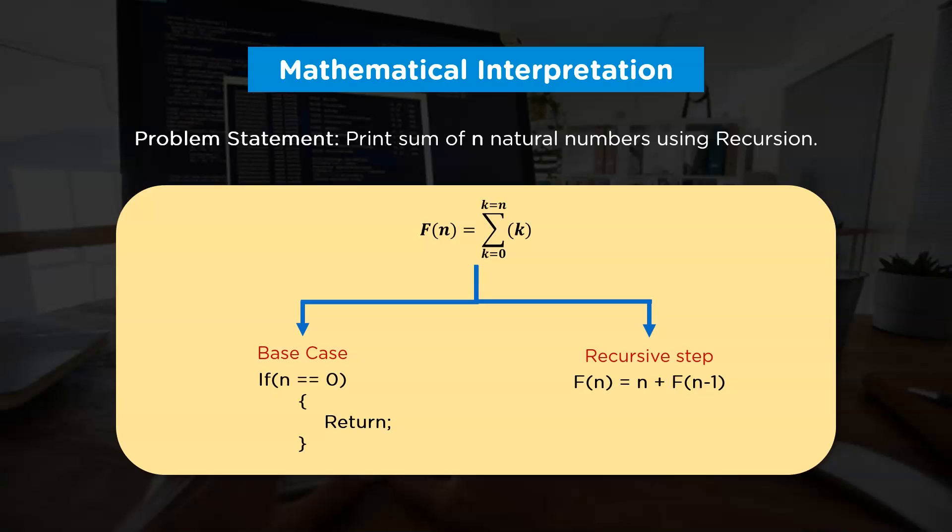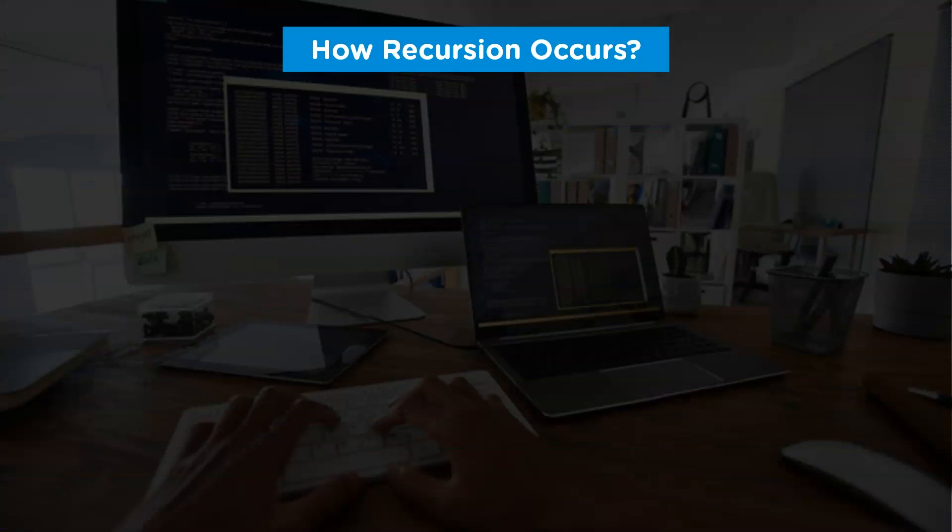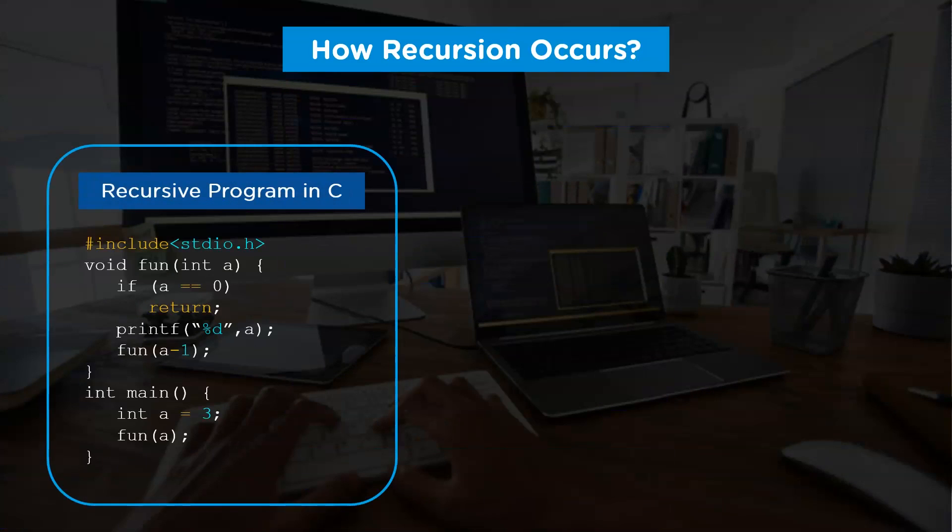Moving further, we're going to understand how recursion gets executed in memory area. In order to do that, we will take this C program as an example. In this program, we have two methods. The main method contains one variable and the statement that invokes a function named fun. This function fun is making a recursive call in its function body. We have both base case and recursive step inside this function's body.